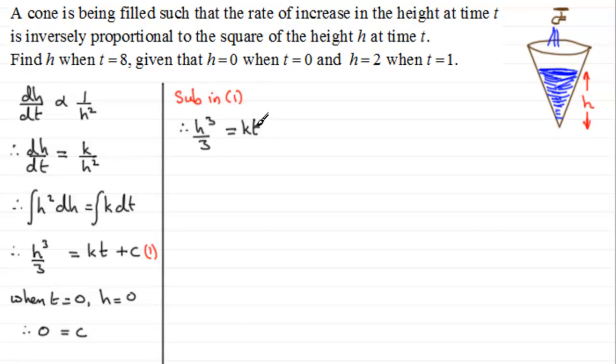Now we need to work out what the other constant k is, and we can do this from this second condition. We can see that when t equals 1, h equals 2, and we can substitute this into equation two.